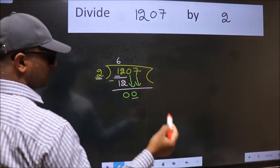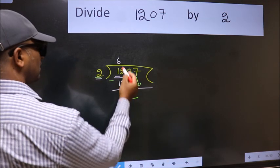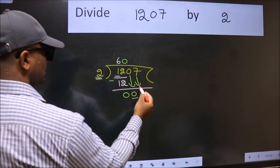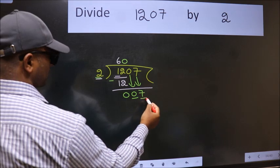And the rule to bring down the second number is put 0 here. Then only we can bring this number down. So 7.